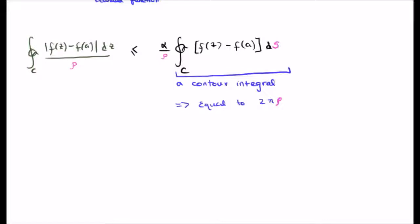So see video number seven if you want to work out why this is equal to twice pi times rho. Of course you're going to have twice pi times rho times alpha over rho giving you twice pi times alpha.